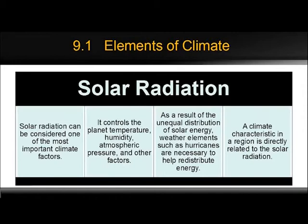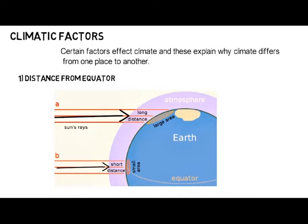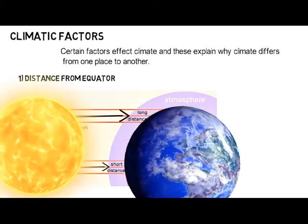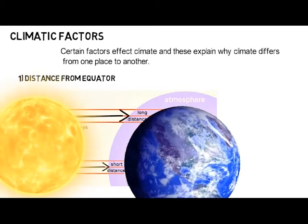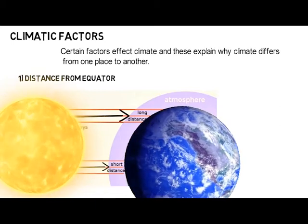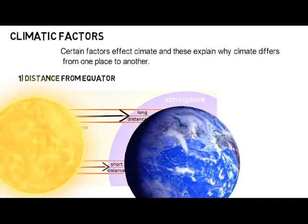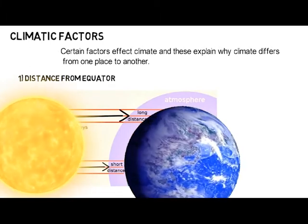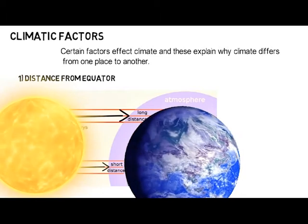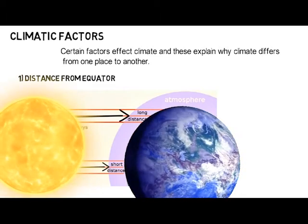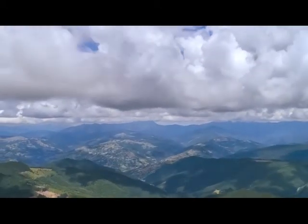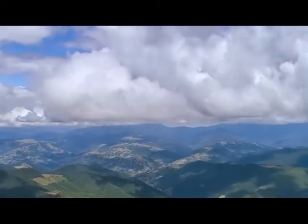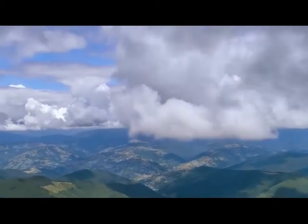Let's discuss the first one: solar radiation. Solar radiation is the radiation energy we get from the sun, also known as shortwave radiation. Solar radiation is probably the most important element of climate. First and foremost, solar radiation heats the Earth's surface, which in turn determines the temperature of the air above. The receipt of solar radiation drives evaporation, so long as there is water available. Heating of the air determines its stability, which affects cloud development and precipitation.